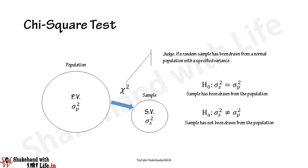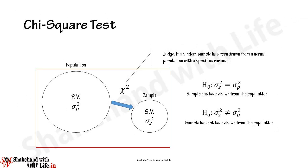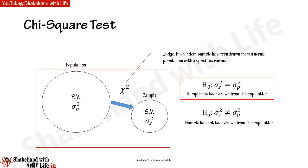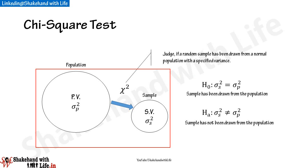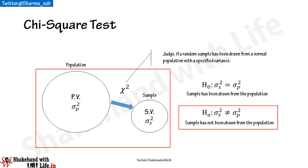The chi-square value is often used to test the significance of population variance. It is used to conclude if a random sample has been drawn from a normal population with a specified variance. The null hypothesis is assumed as H₀ such that σ_s² = σ_p², implying the sample variance σ_s² and the population variance σ_p² are the same, and the sample has been drawn from the population whose variance is σ_p².